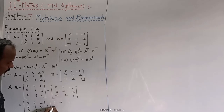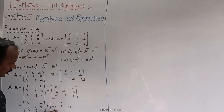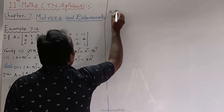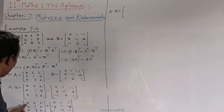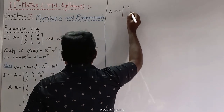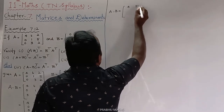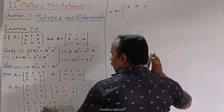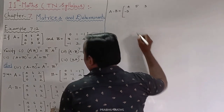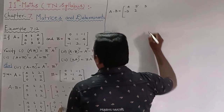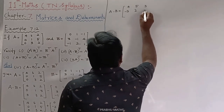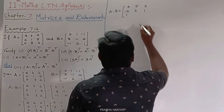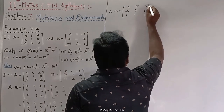Computing A minus B element-wise: 4 + 0 = 4; 6 + (-1) = 5; 2 + 1 = 3; 0 + (-3) = -3; 1 + 1 = 2; 5 + (-4) = 1; 0 + 1 = 1; 3 + (-2) = 1; 2 + (-1) = 1. So A minus B equals [4, 5, 3; -3, 2, 1; 1, 1, 1].